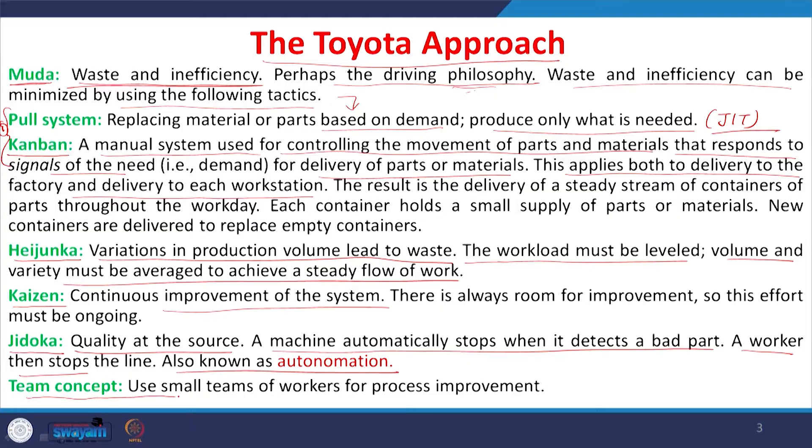Finally, it is about team efforts. We need to use small groups of workers for continuous improvement because one person or one leader cannot do the entire improvement activity. You need to divide employees into various smaller groups so they can carry out improvement activities. The involvement of all employees is very much required in the Toyota approach, the same as in TQM — lean and JIT operations are only possible with team activities.